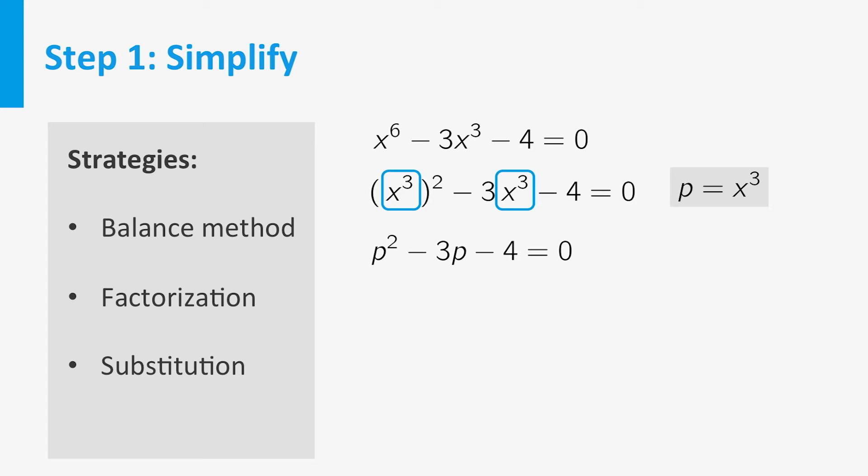This is a quadratic equation which you can solve using your favorite method. We obtain two solutions: p equal to minus 1 or p equal to 4. Now we can return to the original variable x. We get x cubed equal to minus 1 or x cubed equal to 4. We then take cube roots and find x equal to minus 1 or x equal to the cube root of 4, which I cannot really simplify.